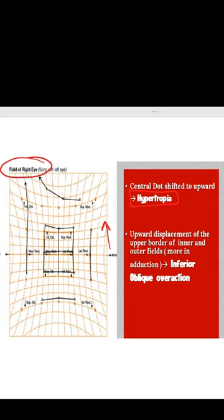Moreover, there is also an upward displacement of the field more in the field of adduction, that means the inferior oblique is overacting.